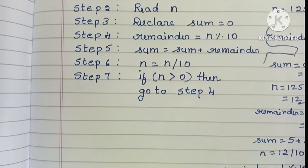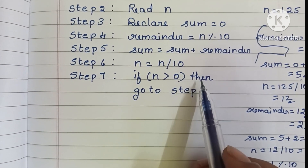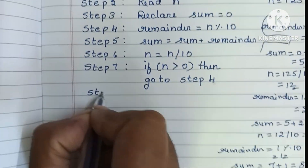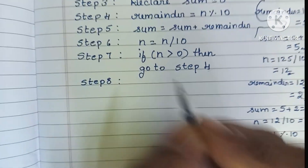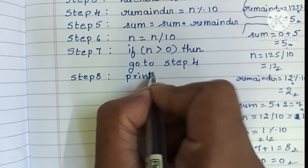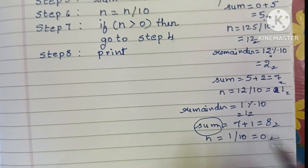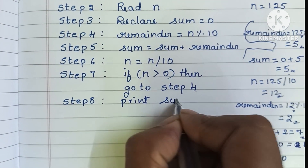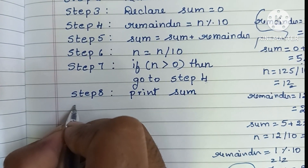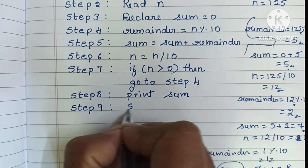In step 7, we check if N is greater than 0. Since N is 0, the condition is false, so we go to step 8 and print the sum of the given digits, which is stored in sum. Then in step 9, we stop the algorithm using a stop statement.